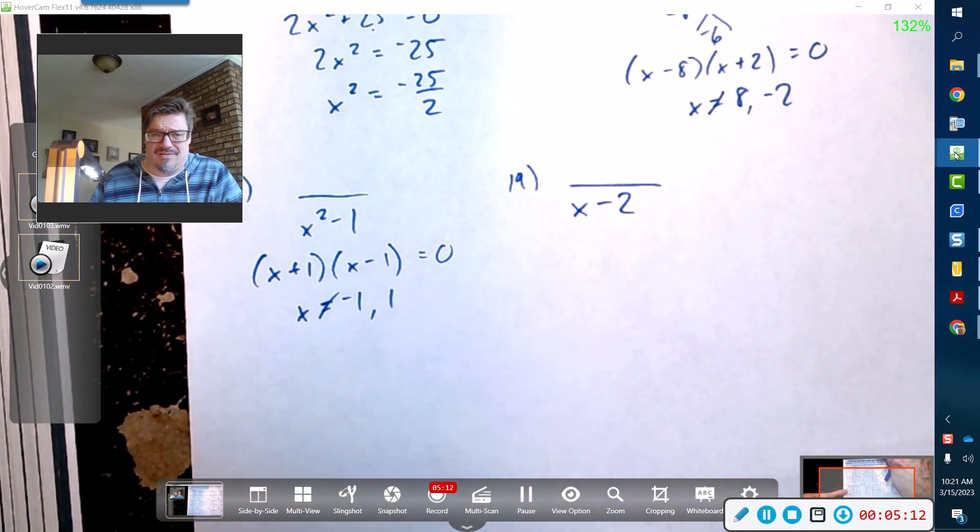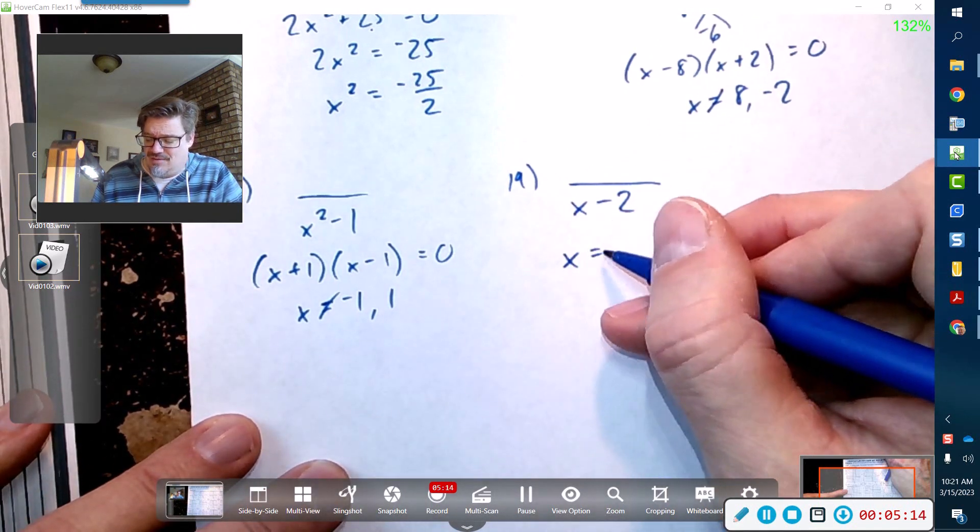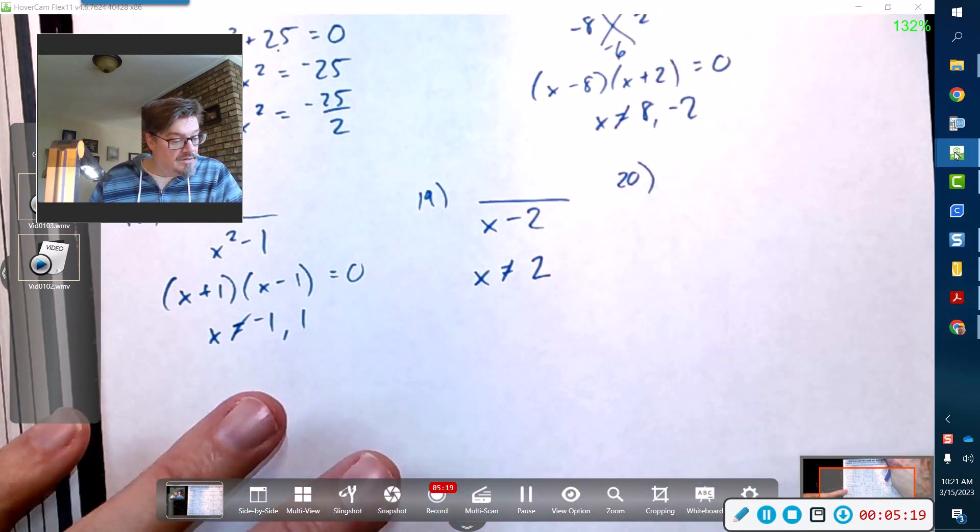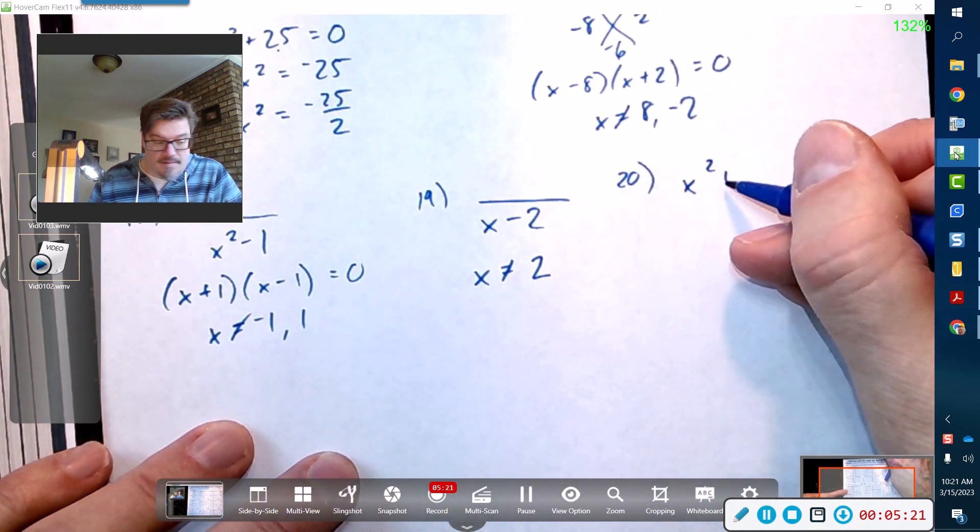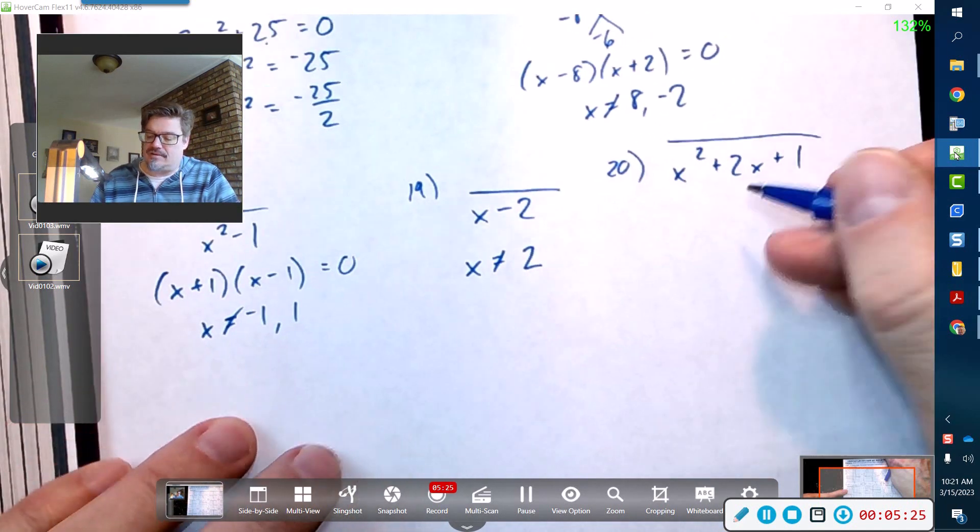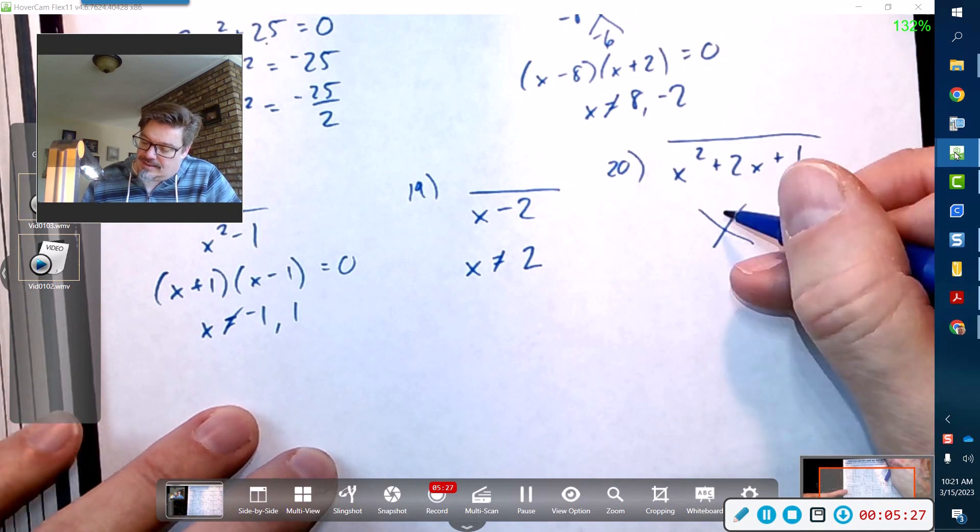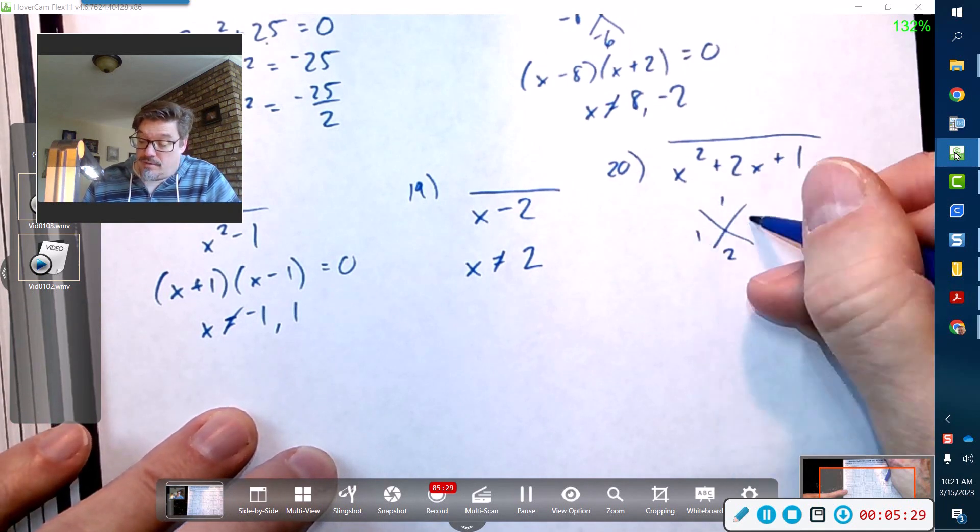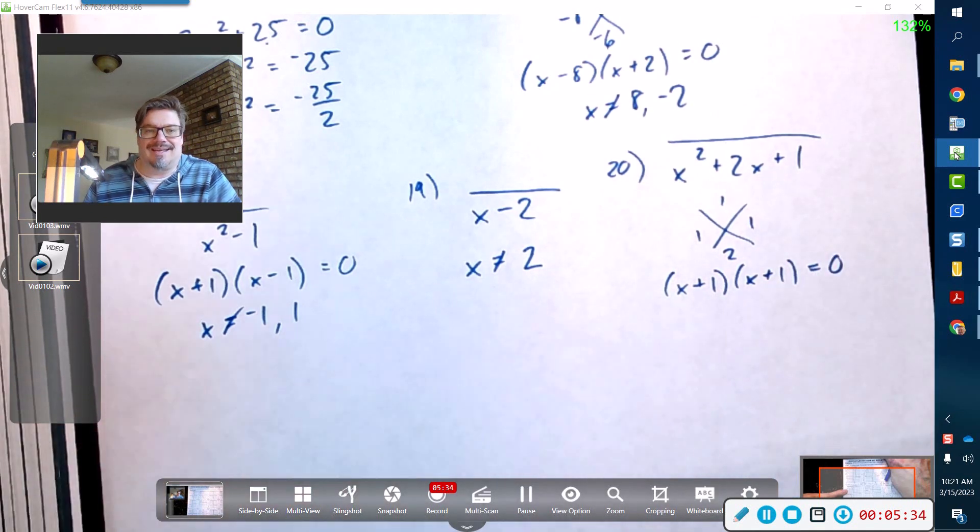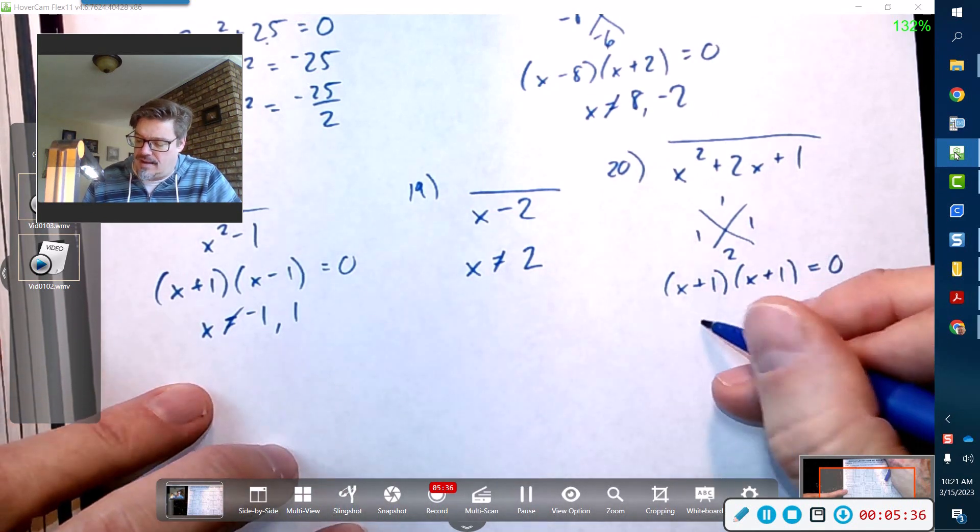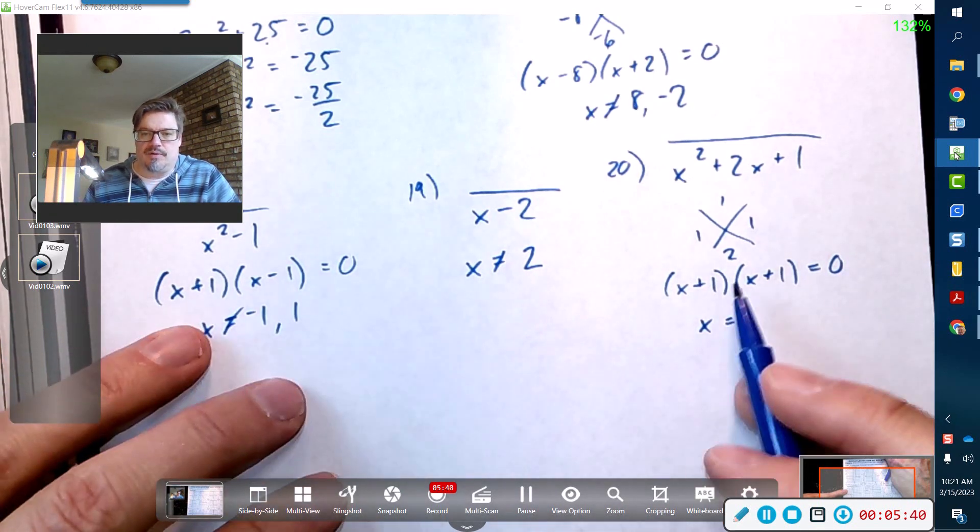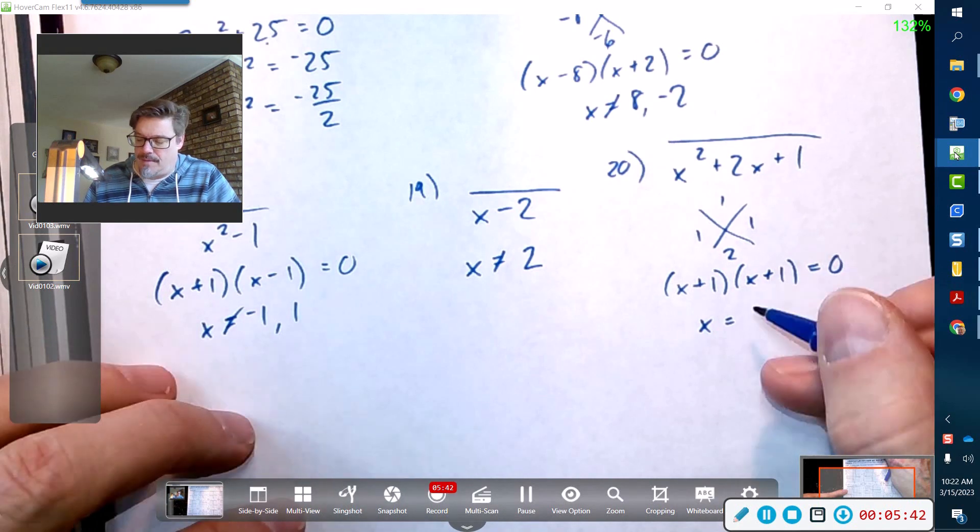Problem 20, we got x² + 2x + 1 in the denominator. Are there any factors of this guy? Let's see, 1 to add up to 2: 1, 1. Cool, that's (x + 1) and (x + 1). Looks like we're just going to get the same number twice. That's called a double root. That would produce a bounce if we try to graph it.